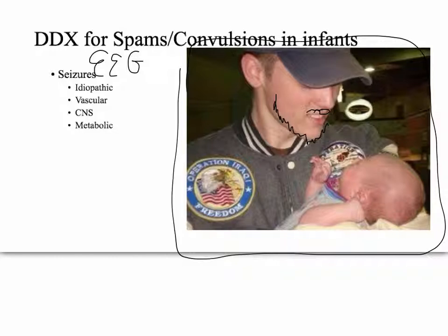The largest portion of seizures are going to be idiopathic — no one really knows why. Think of the causes as vascular, brain, or metabolic. We've got to rule out everything else before we can say we don't know why.